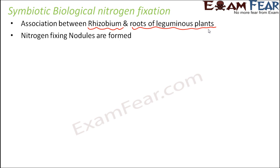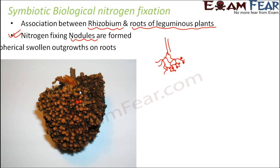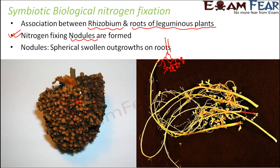During the course of this process, nitrogen-fixing nodules are formed, and how this nodule formation takes place is very important to understand. If you look at the root of a leguminous plant — for example pea, beans, or lentils — normally roots look plain, but for leguminous plants you will have swollen structures on their roots called nodules. These nodules are spherical swollen outgrowths on roots. Here you can see such swollen structures on screen. How they are formed we will discuss very soon.